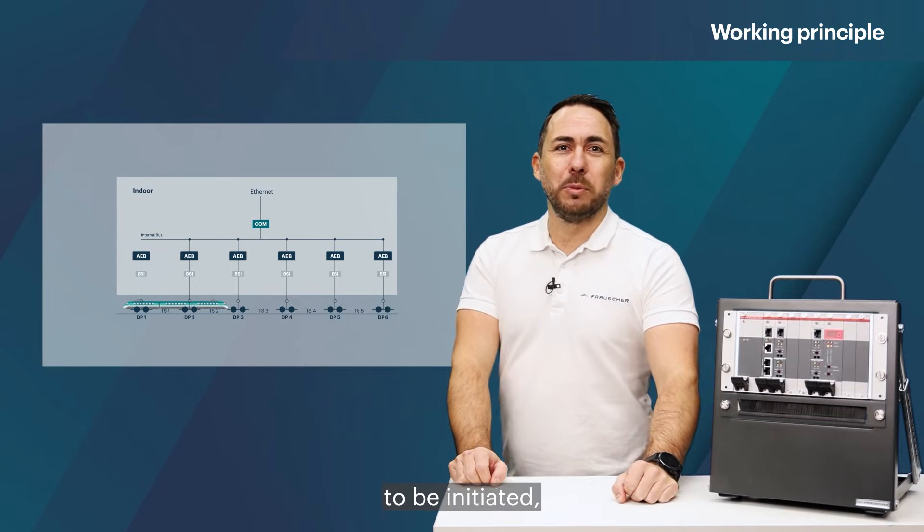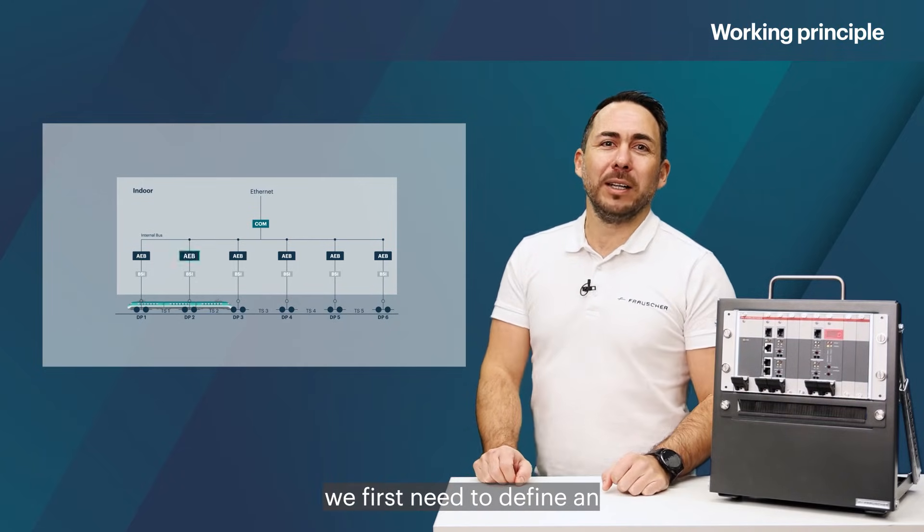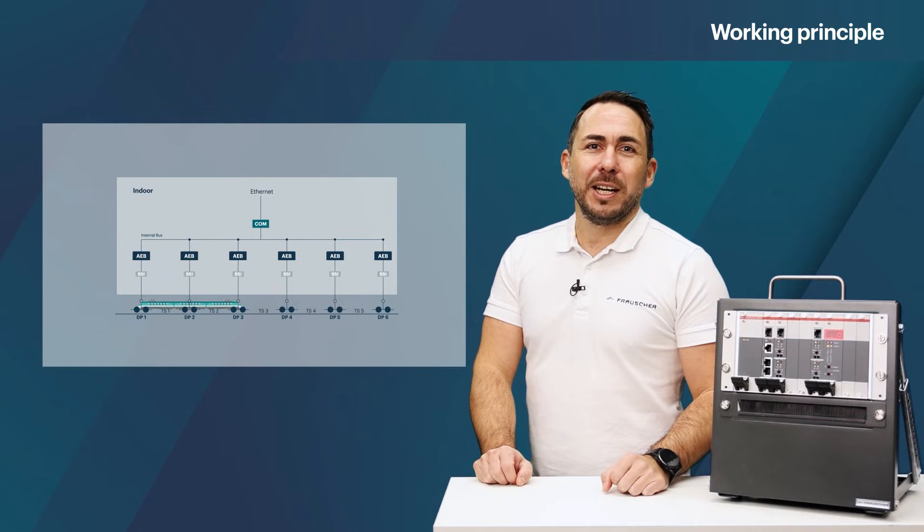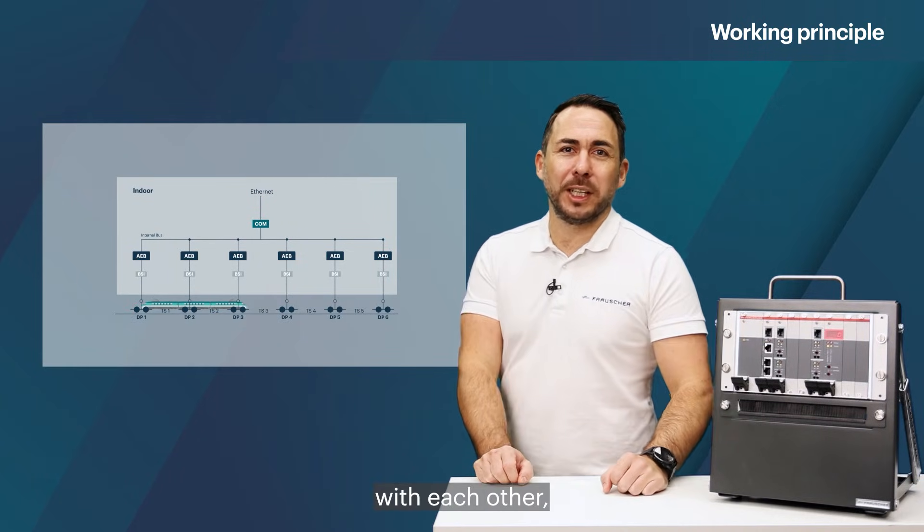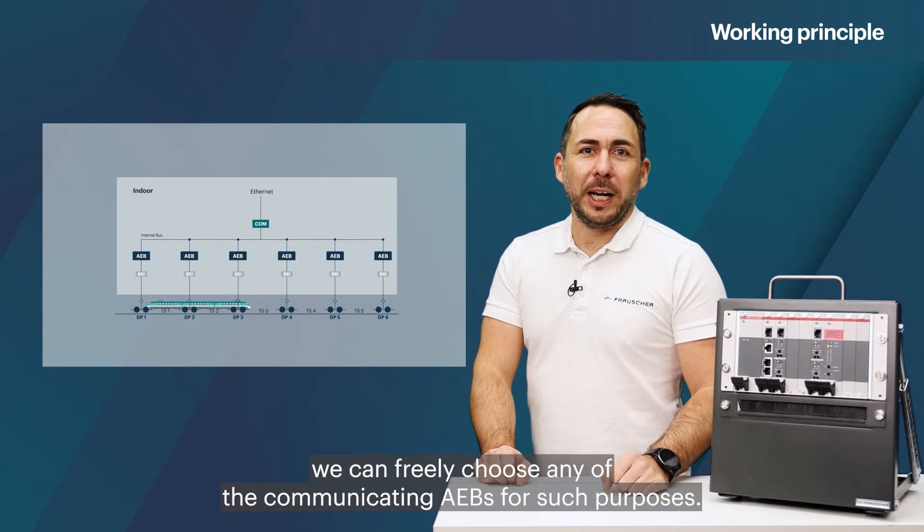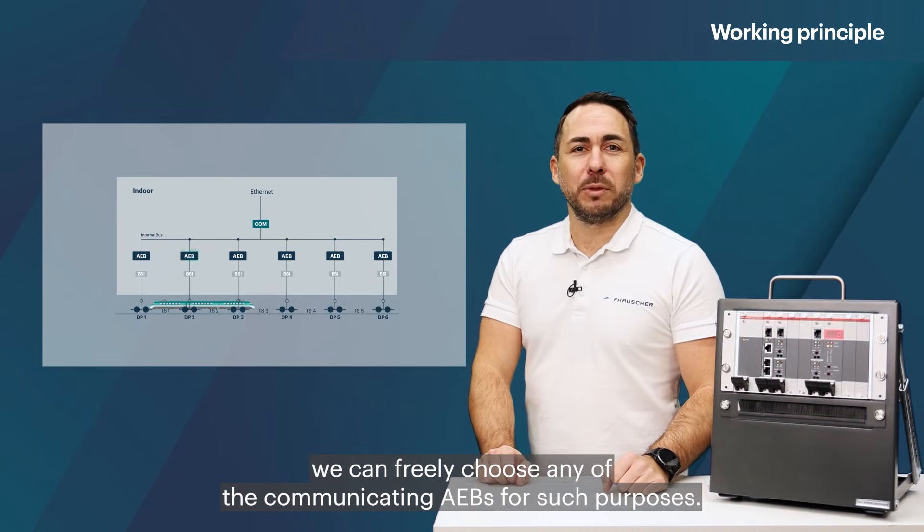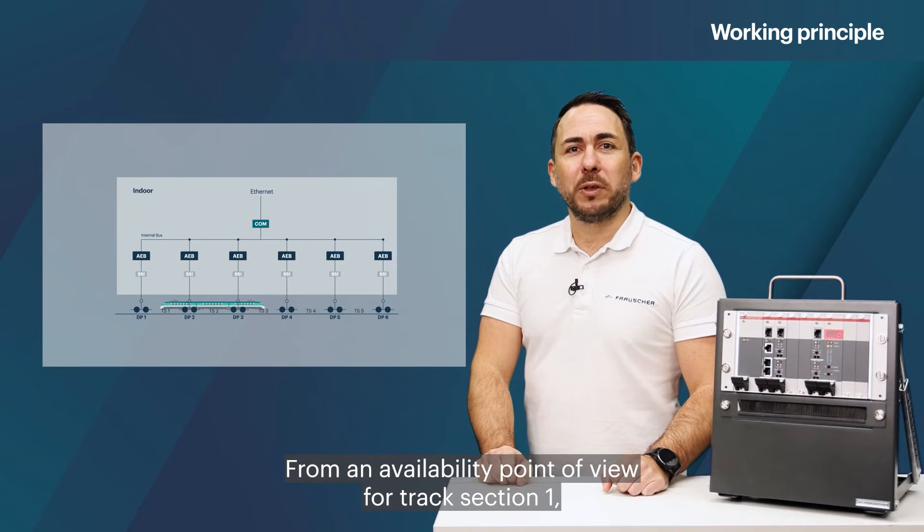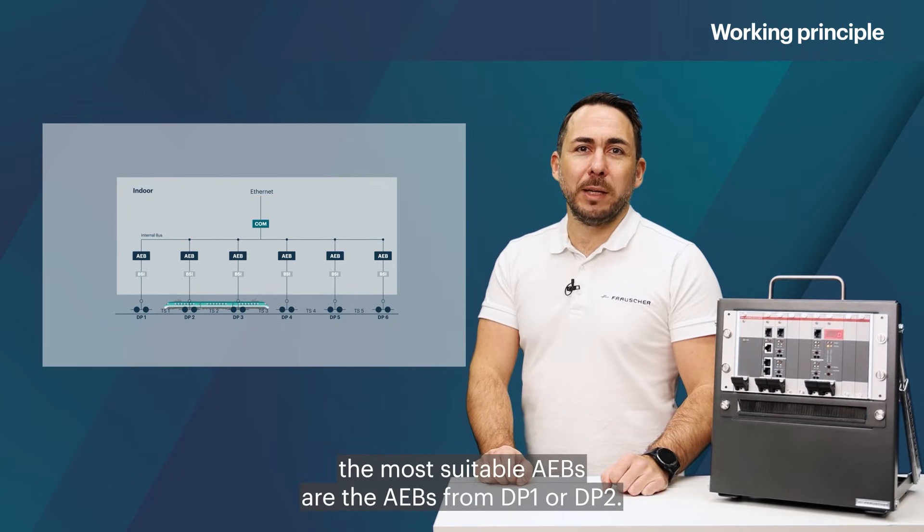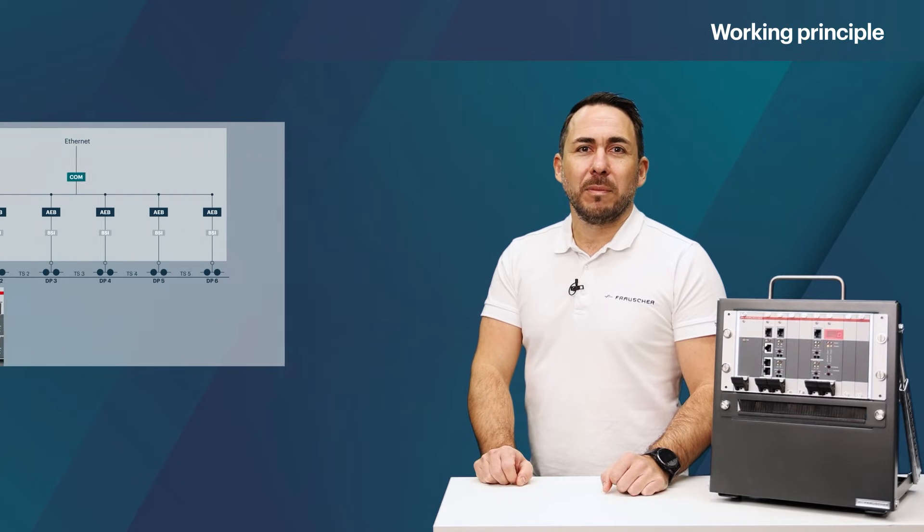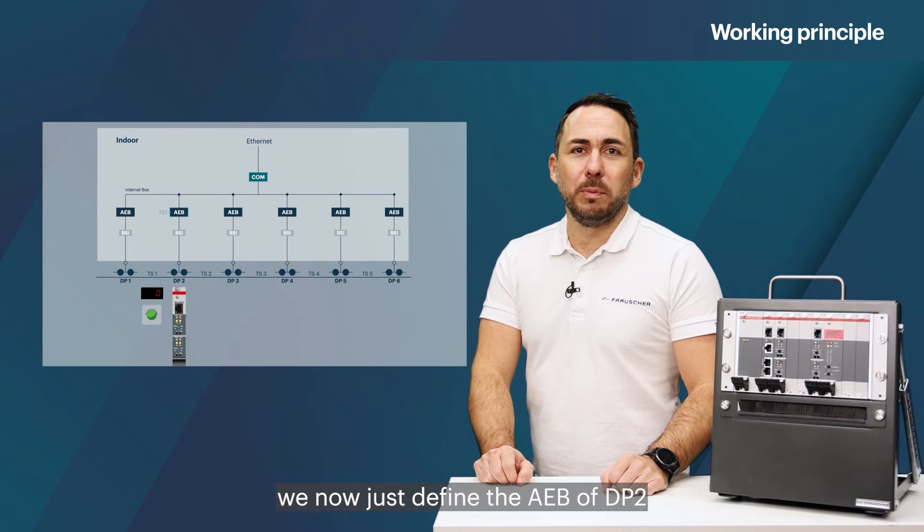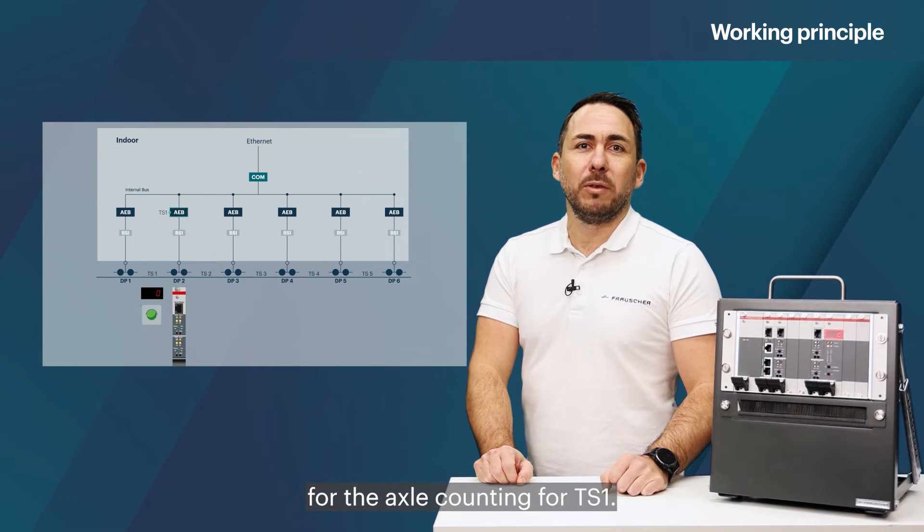For the axle counting function to be initiated, we first need to define an AEB responsible for the evaluation of a track section. As all AEBs communicate with each other, we can freely choose any of the communicating AEBs for such purposes. From an availability point of view, for track section 1, the most suitable AEBs are the AEBs from DP1 or DP2. So in this example, we now just define the AEB of DP2 for the axle counting for TS1.